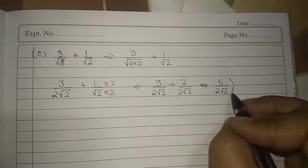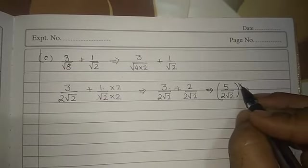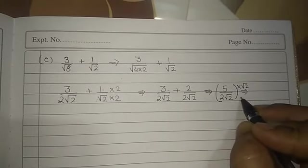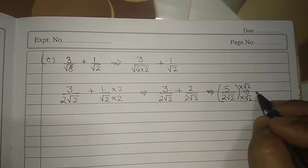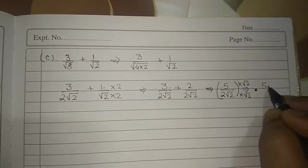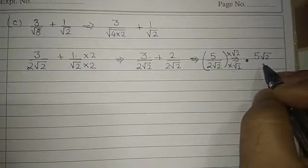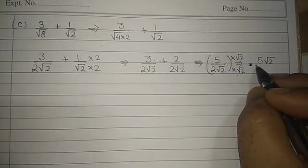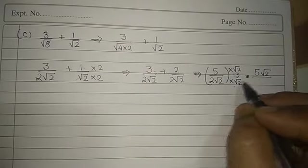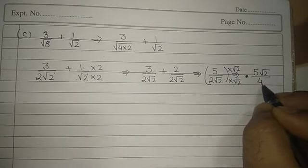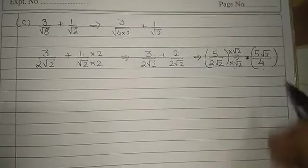Now this can also be changed. What we have to do, we have to multiply it by root 2 by root 2 up and down. So it will come 5 root 2 upon 2 is there and root 2 root 2 become 2, so it will come 4. So the answer is 5 root 2 upon 4.